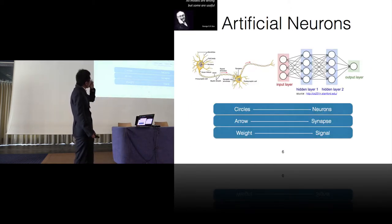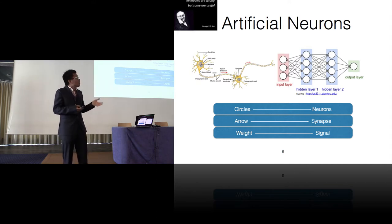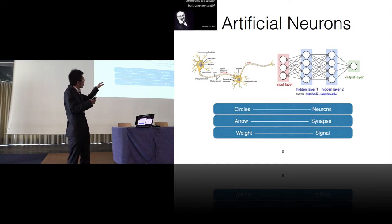So on the right side is a cartoon representation of the neural network, where the circles are individual neurons, and the arrows are the connections, which are the correspondence of all these synapses, and the weights are the signals. So in reality, what we do is we learn the weights associated with each connection of a neural network.